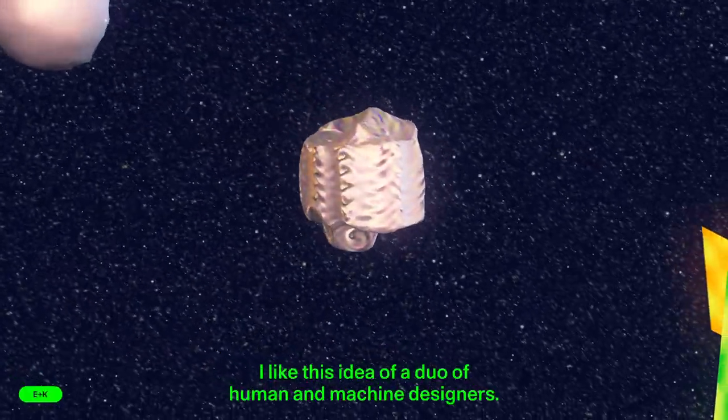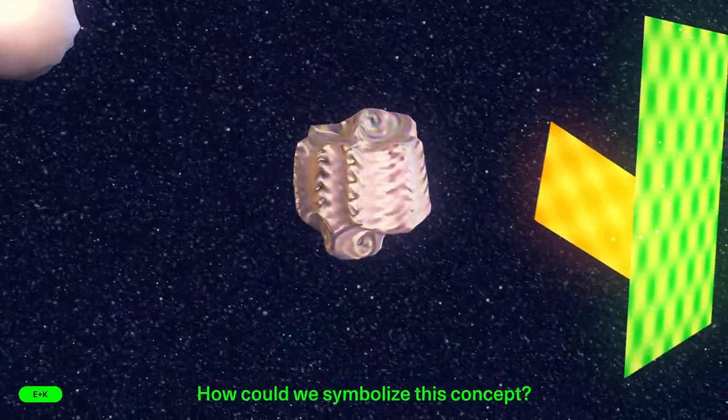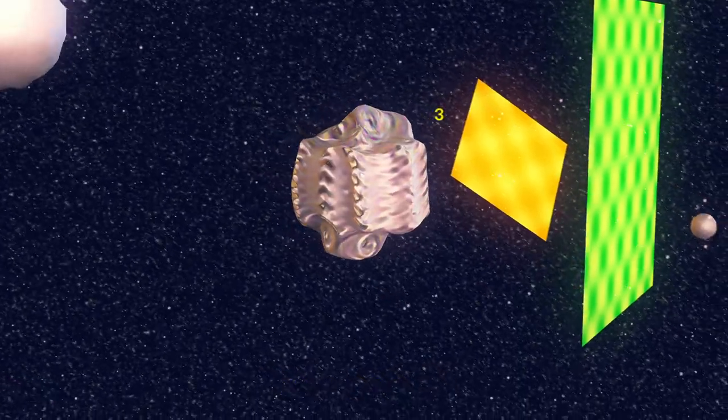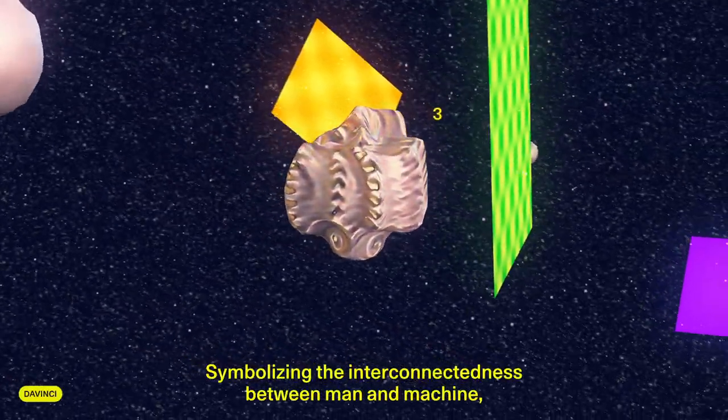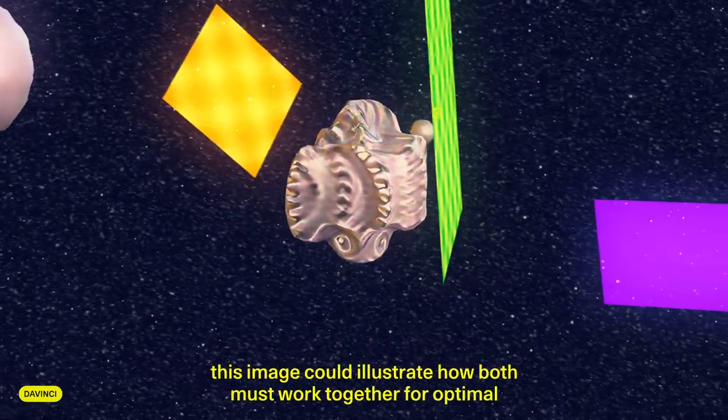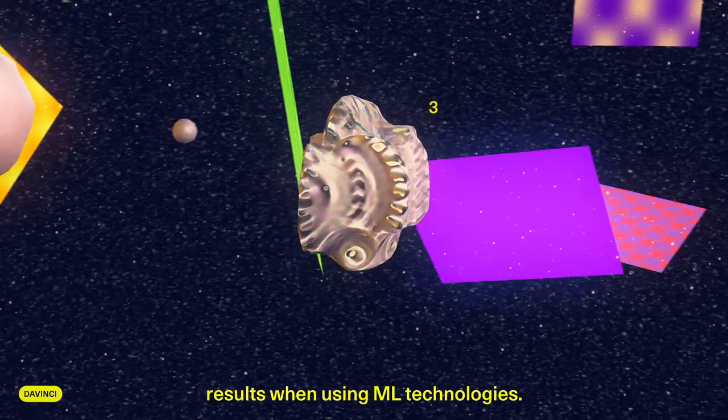I like this idea of a duo of human and machine designers. How could we symbolize this concept? With a set of gears. Why? Symbolizing the interconnectedness between man and machine, this image could illustrate how both must work together for optimal results when using ML technologies.